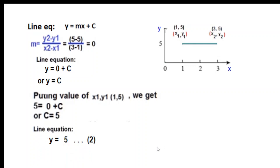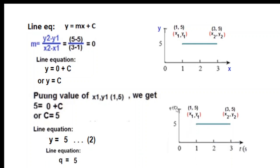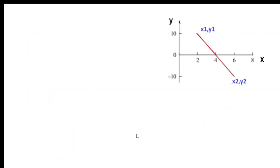Our equation now is y = c = 5. Here also, if the parameters are given as q and t, we just modify y to write q, so q = 5 is the line equation for this case.